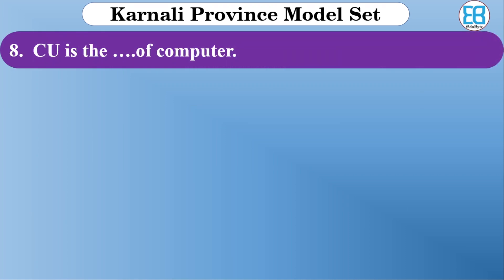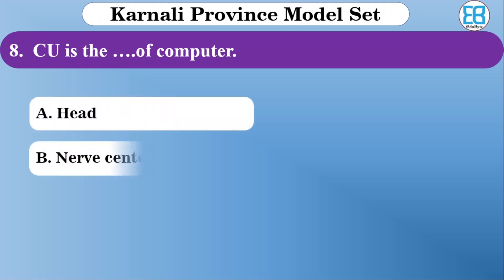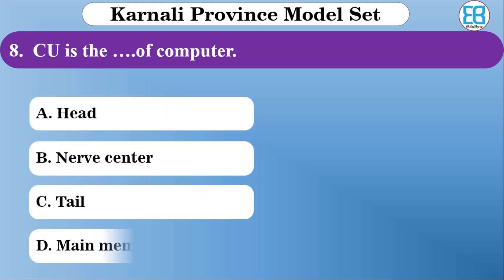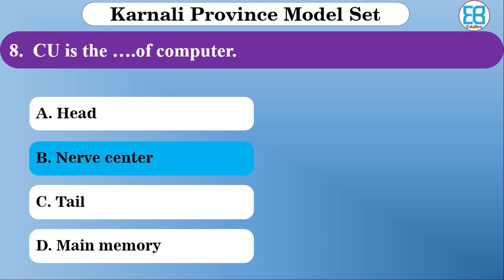CPU is the daughter — or brain — of the computer. CPU is referred to as the brain of the computer, as the head and center. The correct option is not centered — meaning CPU is referred to as the brain.